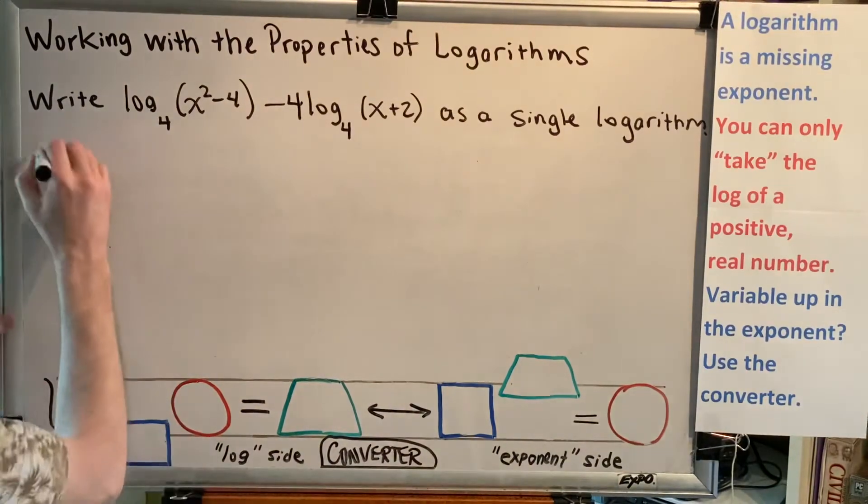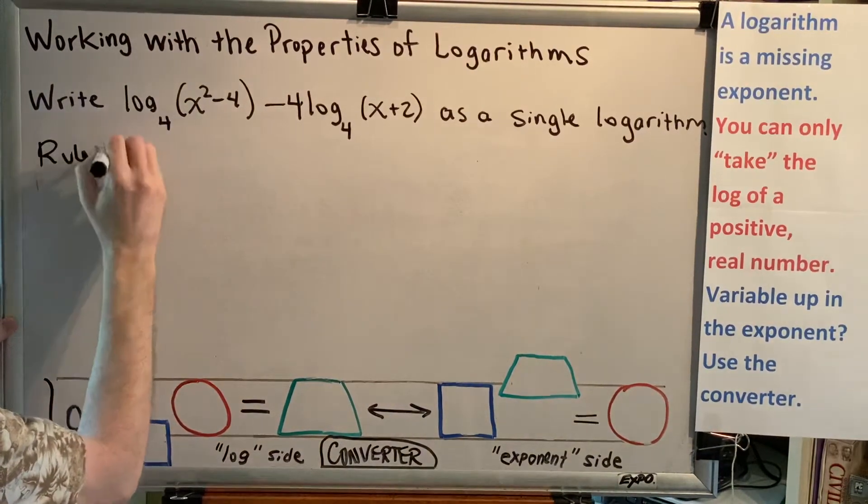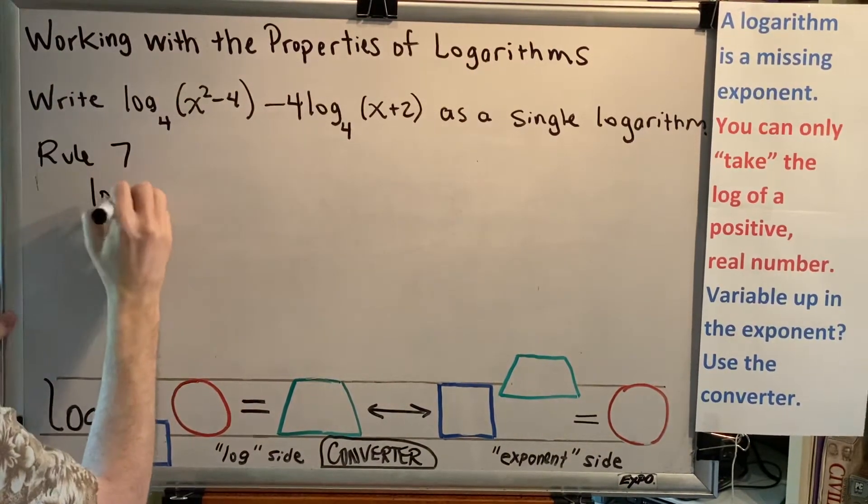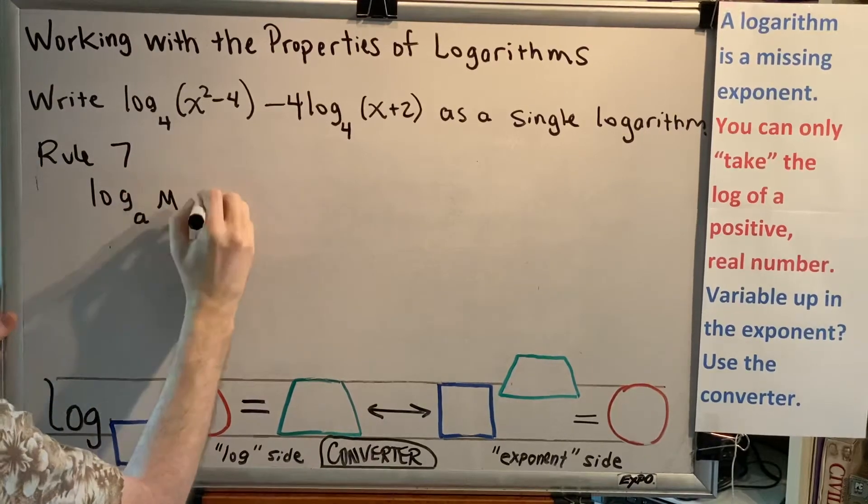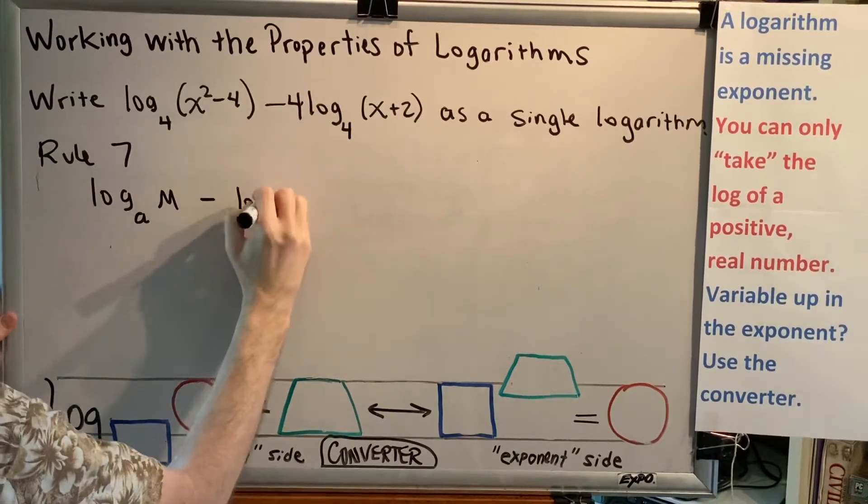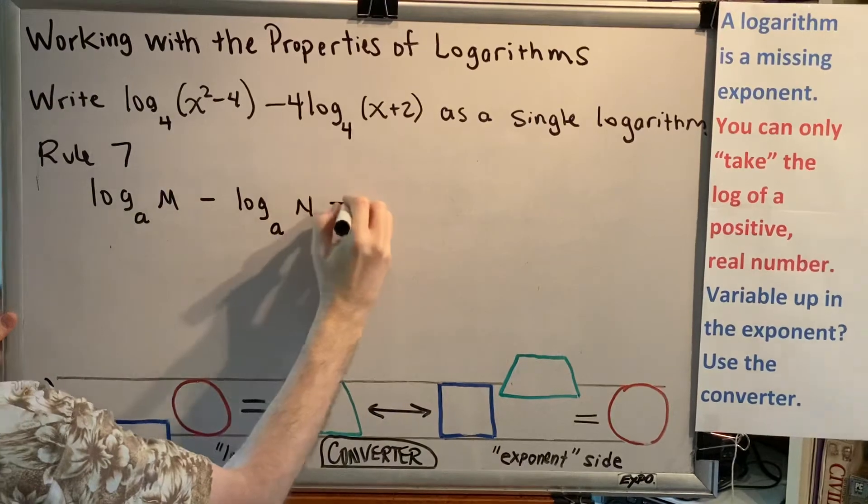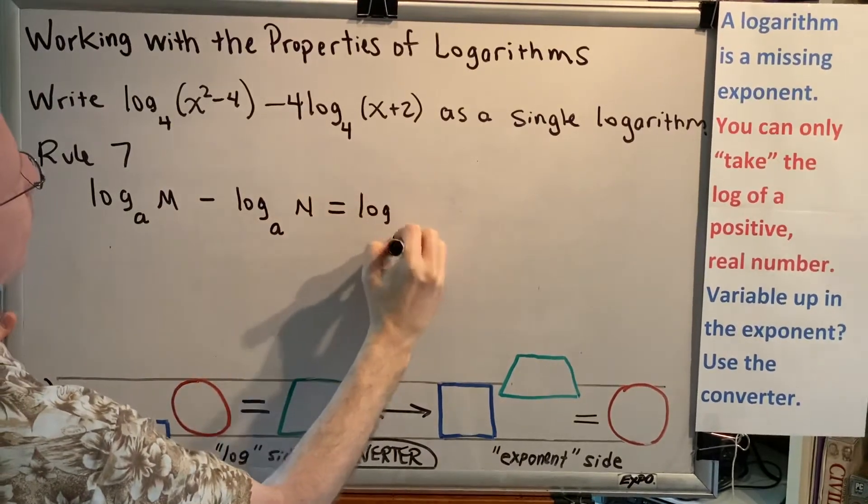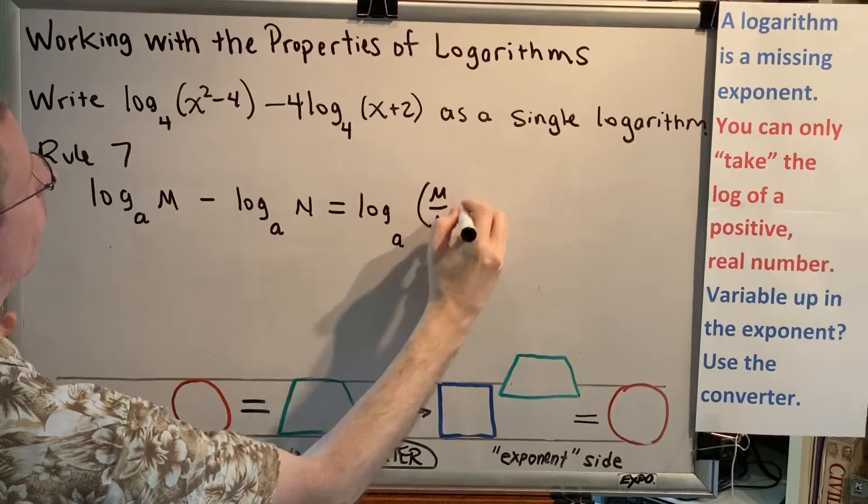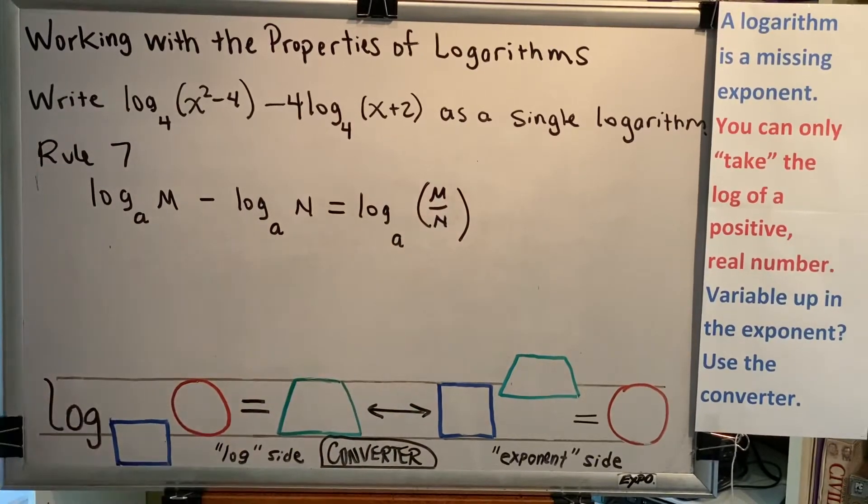The rule that comes to mind is Rule 7. Rule 7 says log base a of m minus log base a of n equals log base a of the quotient m over n. We would like to use Rule 7 for this problem, but we cannot use it yet, and the reason why is because of this 4.